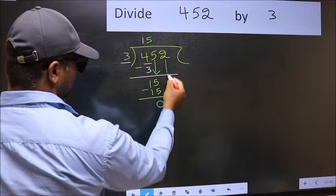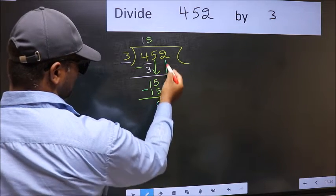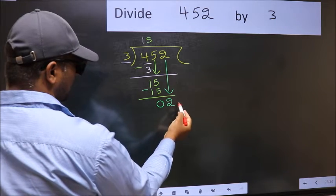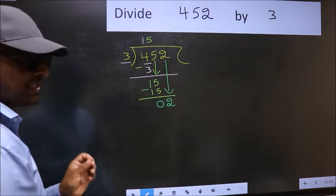After this, bring down the beside number. So 2 down. After this step, the mistake happens.